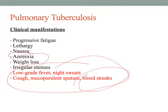Additional history questions include any known exposure to TB, exposure to sick people, living conditions such as areas with a high density of ill people, and other comorbidities. If a patient is HIV-positive and presents with these signs and symptoms, we will be very suspicious of TB.